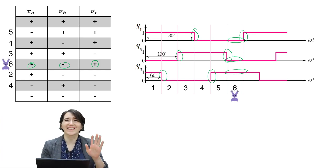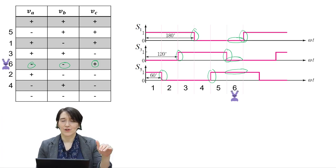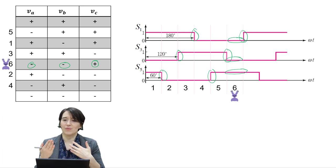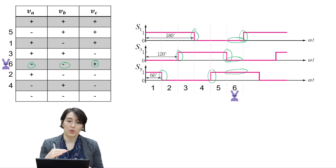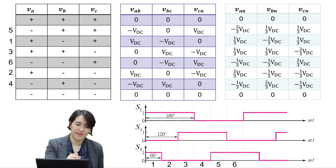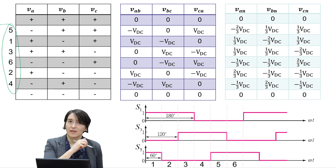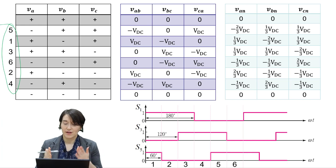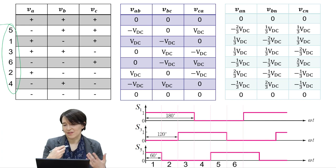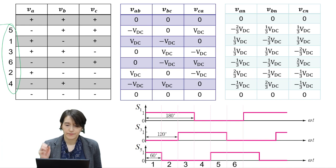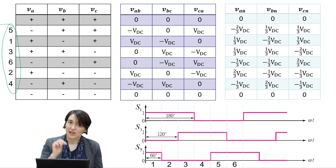Note that we don't use the states where all poles are positive or all negative, because that would give us all zeros at the output and we want to be continuously operating. So we have our sequence showing only the six active switching states, and now we're going to look at the different output voltages — either line-to-line or line-to-neutral. We'll stick with line-to-line in this example.